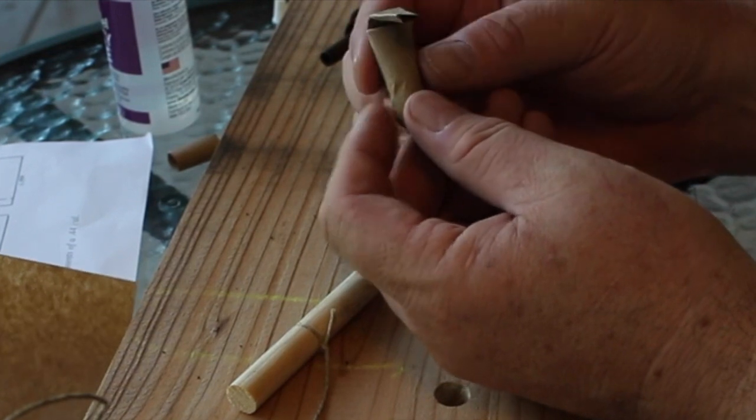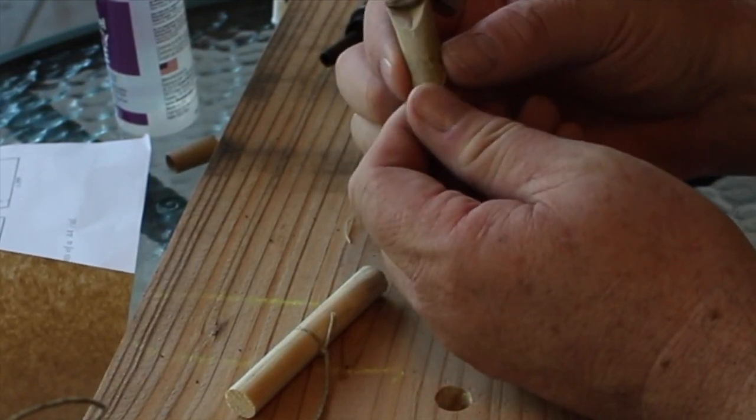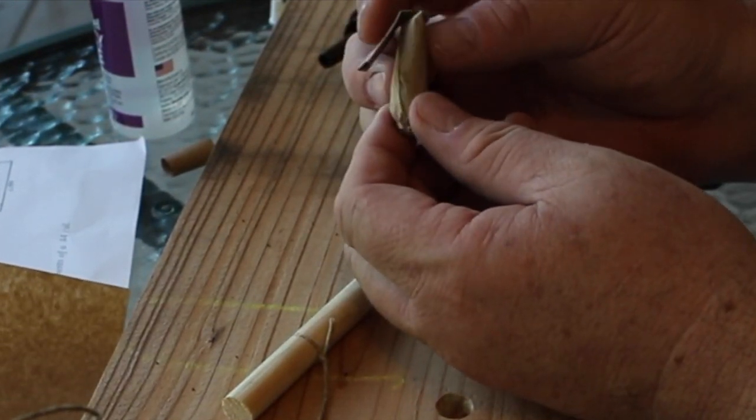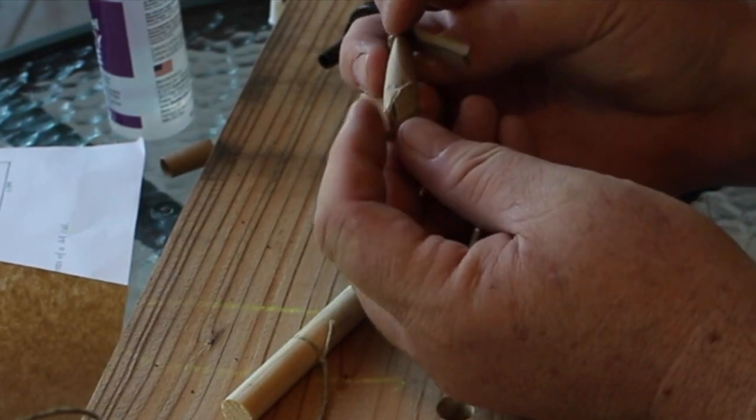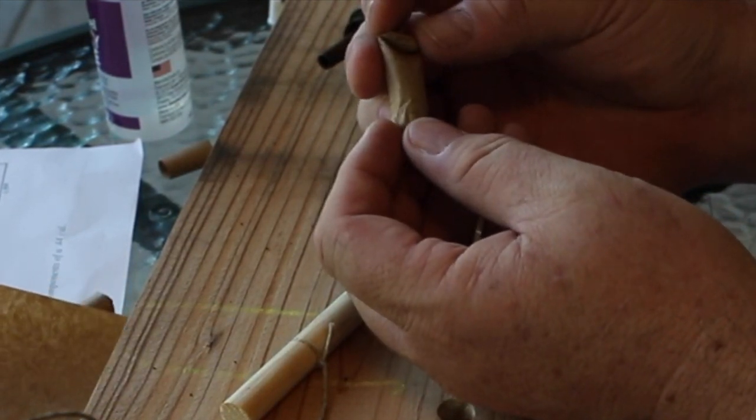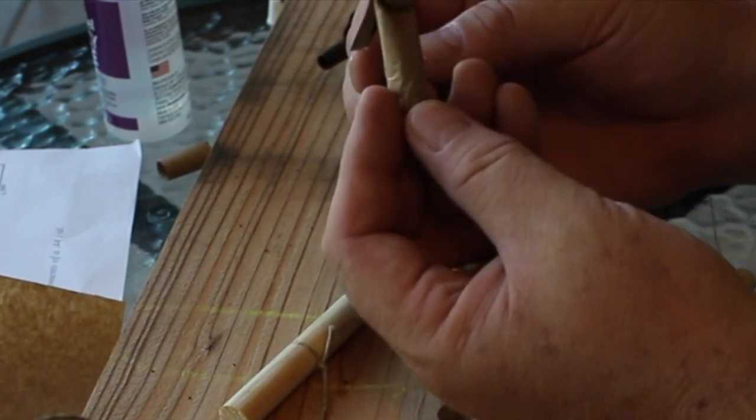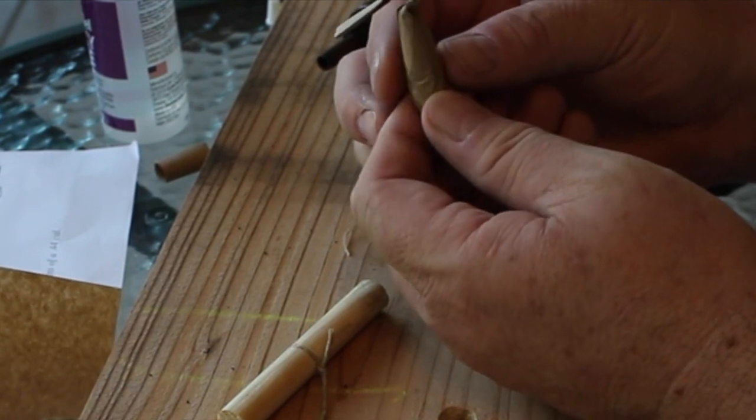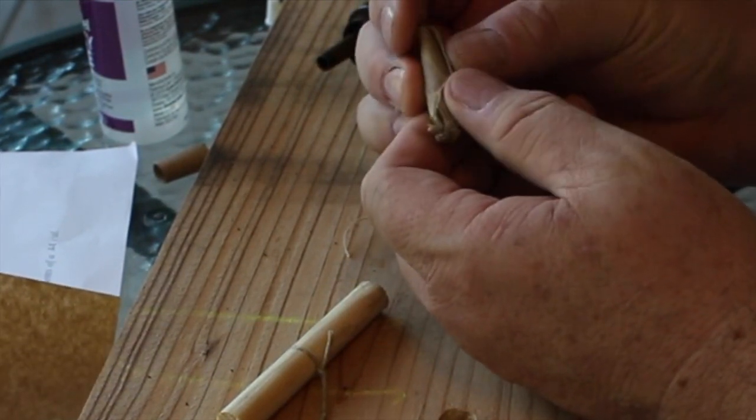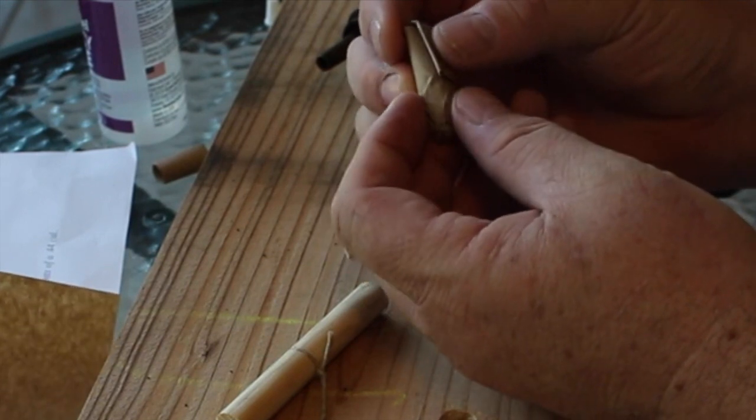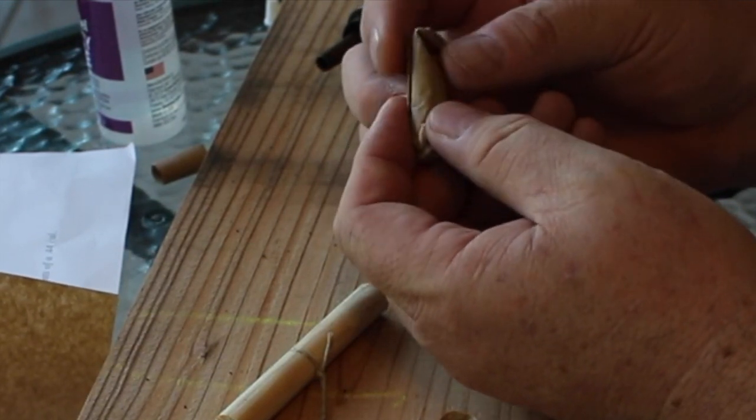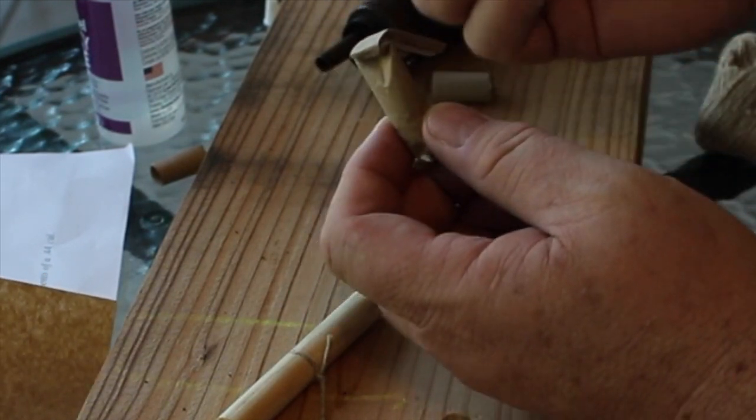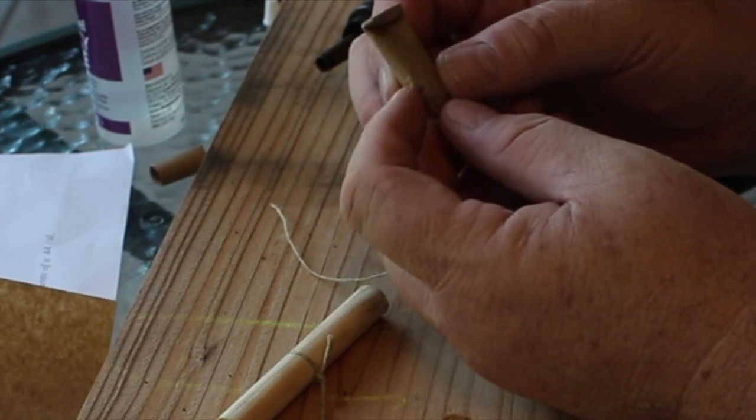These would have been bundled together with six cartridges and then an empty tube, one of these outer tubes tied on one end with seven or eight percussion caps inside that. And then the end twisted. The six cartridges and the percussion cap tube would have been bundled together in brown paper, very similar to this, and then tied on the outside with linen thread. And that's how they were issued to the soldiers.